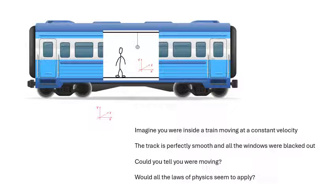Imagine you're inside a train moving at constant velocity on a perfectly smooth track with all the windows blacked out. Would you be able to tell you were moving? Would all the laws of physics apply inside that moving train just as they would if the train were stationary? A ball dangling from the ceiling would behave normally, dropped objects fall, projectiles trace parabolas — everything inside the train is exactly the same as outside.